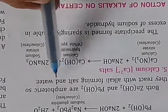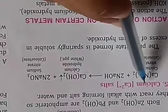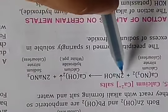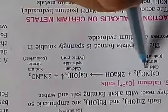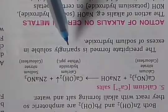Both zinc hydroxide and lead hydroxide are amphoteric, so they react with alkali forming salt and water. For calcium salt, when calcium nitrate, which is a colorless solution, reacts with NaOH, it forms a white precipitate of calcium hydroxide. The appearance of a white precipitate indicates the given salt is a calcium salt. The calcium hydroxide precipitate is sparingly soluble in excess sodium hydroxide.